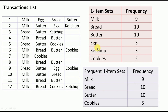We count how many times each product appears across 12 transactions. For example, milk is bought nine times. Similarly, bread appears 10 times, butter 10 times, egg 3 times, ketchup 3 times, and cookies 5 times.